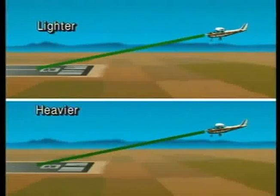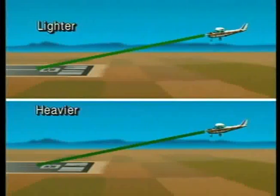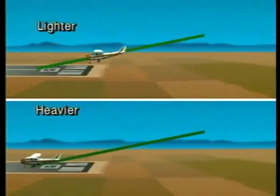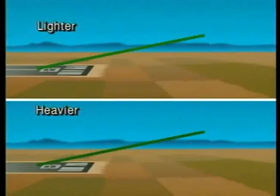Although the weight of the airplane doesn't affect glide ratio, it does affect the airspeed that must be flown to attain the best glide distance. Since a heavier airplane will sink faster, a higher airspeed must be maintained to support the greater weight and yield the same glide distance as a lighter airplane.